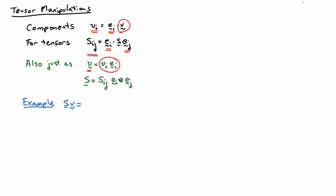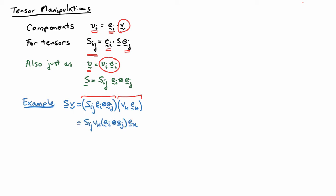Let's look at an example — go ahead and operate on a vector V with a tensor S, using our expressions above. I'll substitute in for S: Sij EI outer product EJ. And then for V, I'll substitute in its expression in terms of the components: VK EK. The components Sij and VK are just numbers, so you can move them around in the expression.